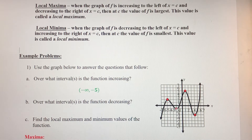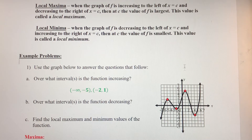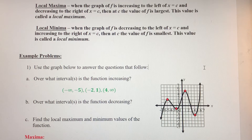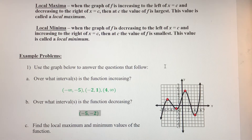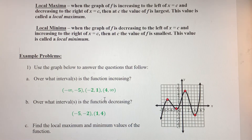X is negative 2 here, and it increases until X is 1, so the next increasing interval is from negative 2 to 1. Then the last increasing interval is from positive 4 to infinity. So there are three different intervals over which this function is increasing. It's decreasing in the other two: from negative 5 to negative 2, and from positive 1 to positive 4.